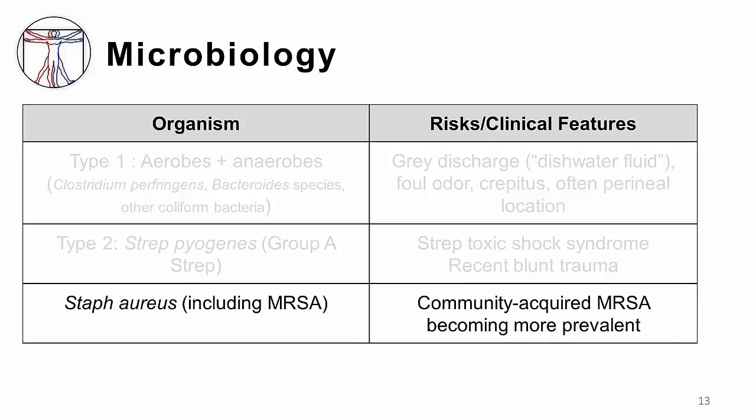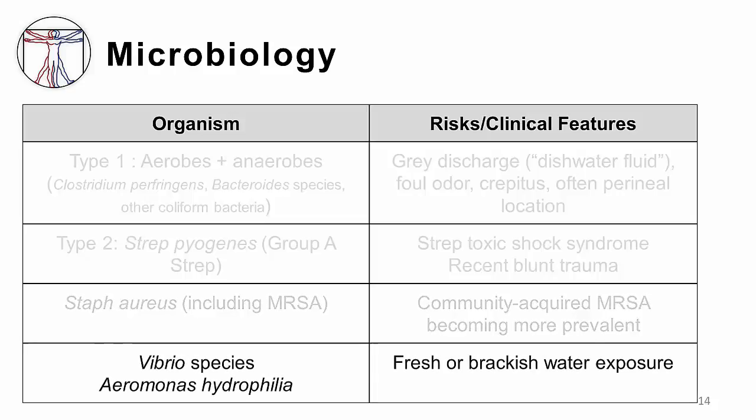A previously rare but now increasing cause of necrotizing soft tissue infection is Staph aureus, including community-acquired MRSA infection. In a patient with a severe soft tissue infection and a recent history of water exposure, Vibrio and Aeromonas species should be considered in your differential diagnosis.